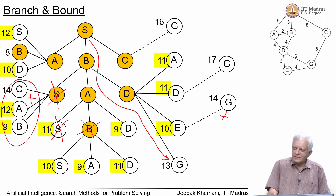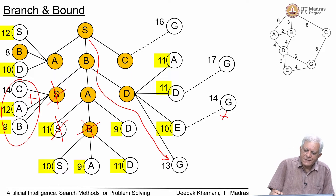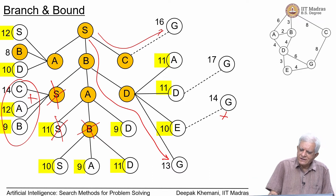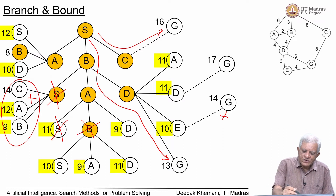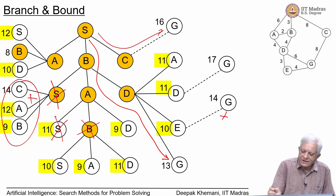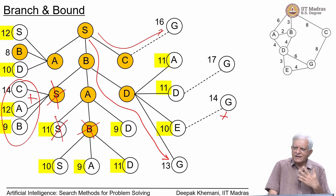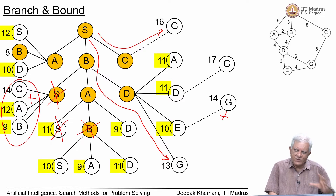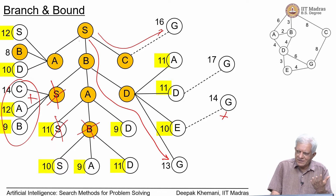What the algorithm is doing is keeping track of all paths it has found and extending the cheapest one. For example, the path S to C to G has cost 8+8=16; the path S to A to B costs 8; S to B directly costs 3. All of these are partial paths. Every node has a cost associated with it representing the cost of reaching that node. For instance, node D at the bottom gets value 11 because the path S-B-A-B-D accumulates that cost.